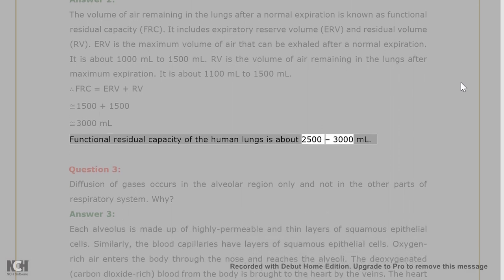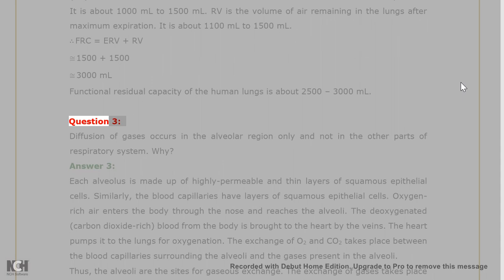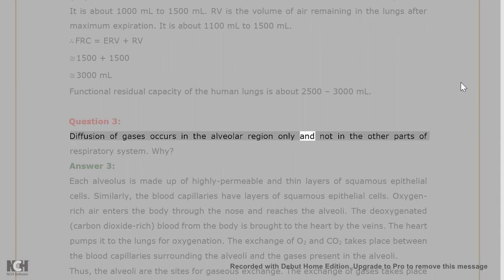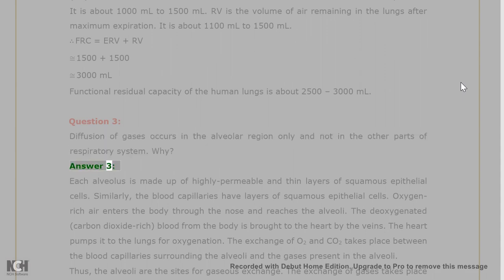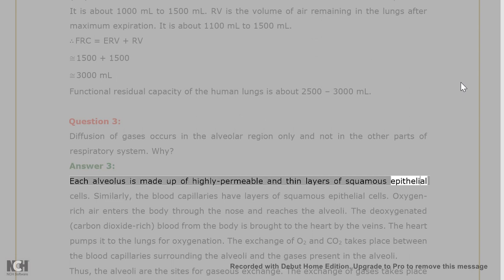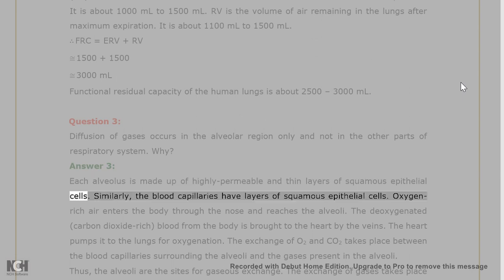Question 3: Diffusion of gases occurs in the alveolar region only, and not in other parts of the respiratory system. Why? Answer 3: Each alveolus is made up of highly permeable and thin layers of squamous epithelial cells. Similarly, the blood capillaries have layers of squamous epithelial cells.